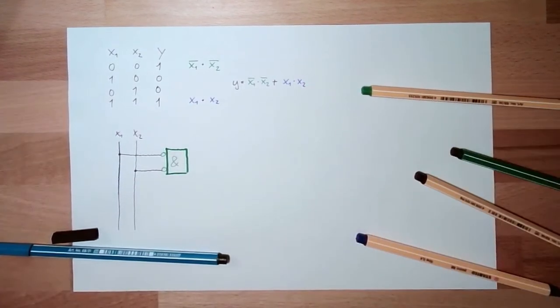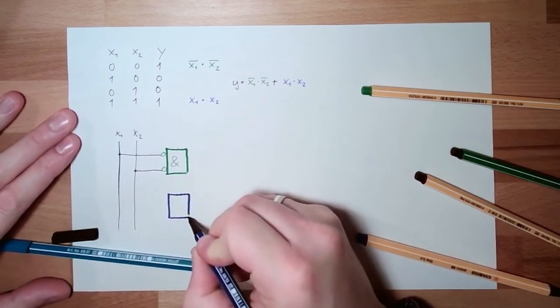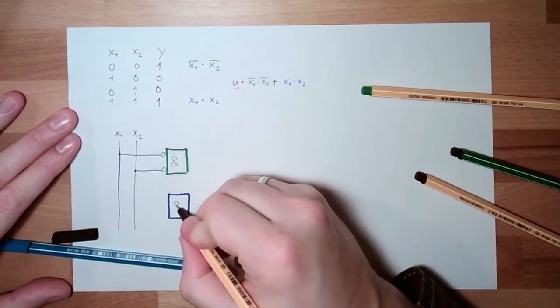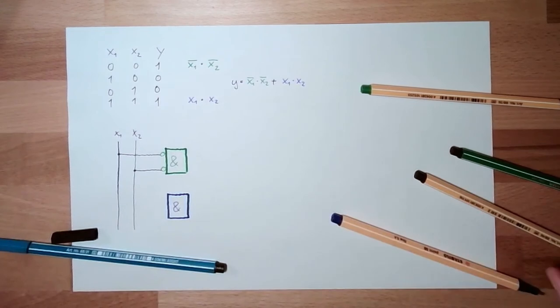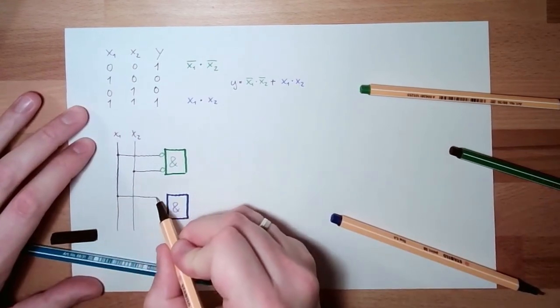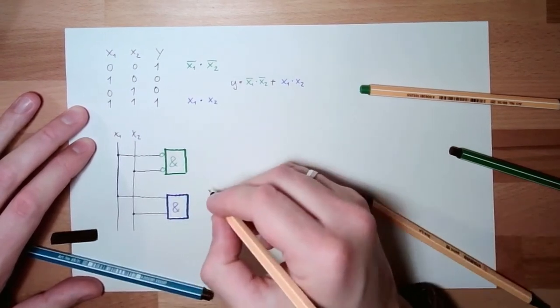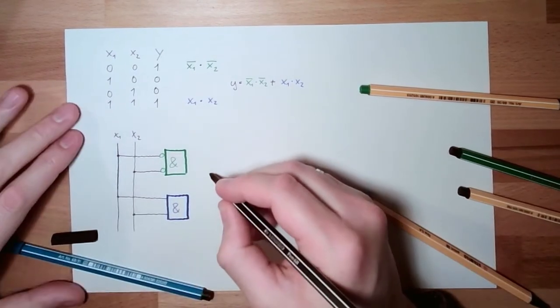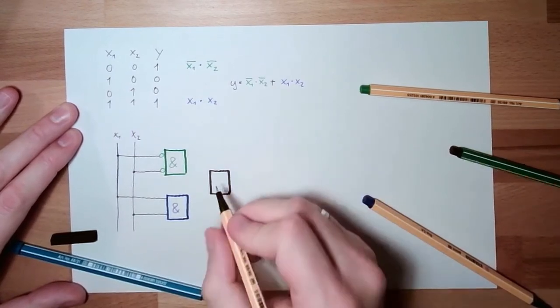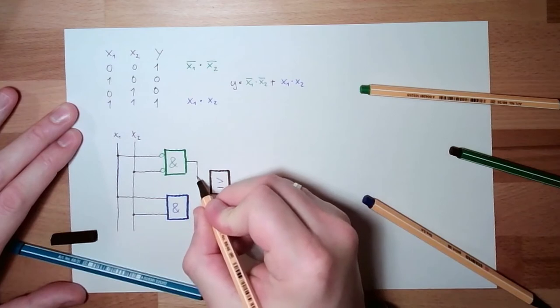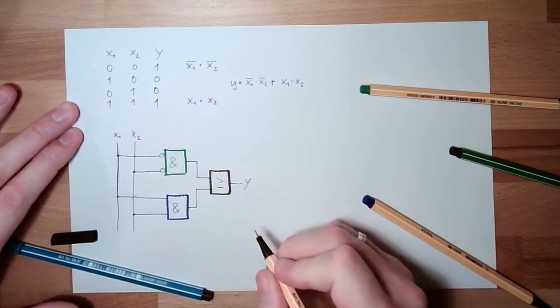Now, the second part, it's also an AND. And this time I did no inversions. This time I just need x1 and x2. And the output of both, there must be an OR. So I need here, I need an OR. This is the output of this, the green, OR the blue part, and this is Y.